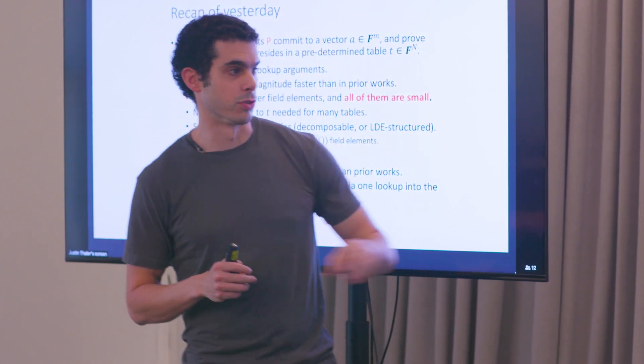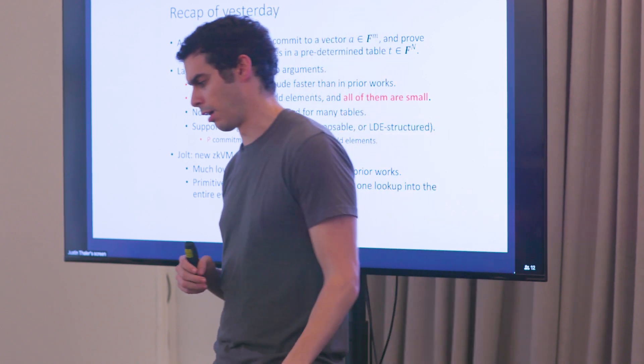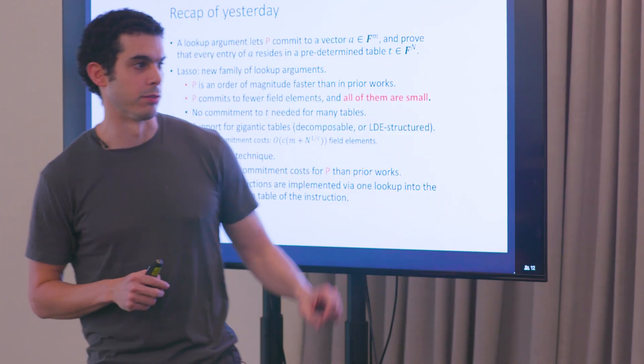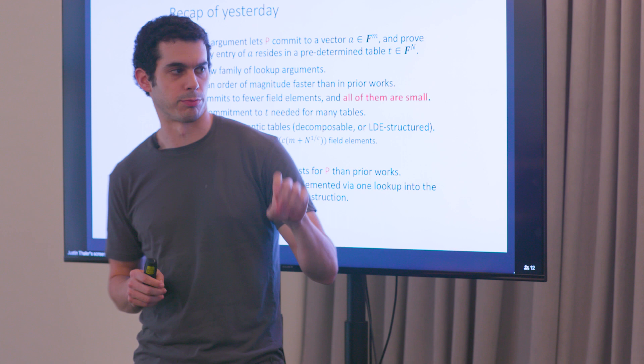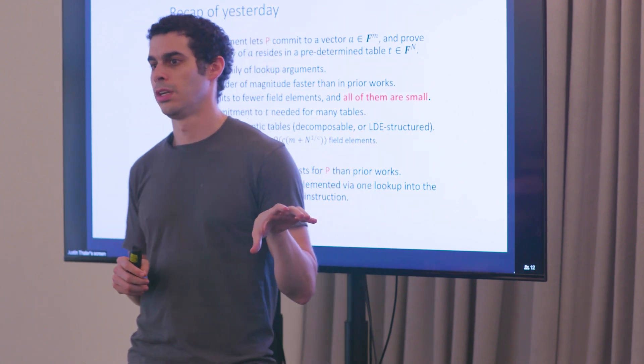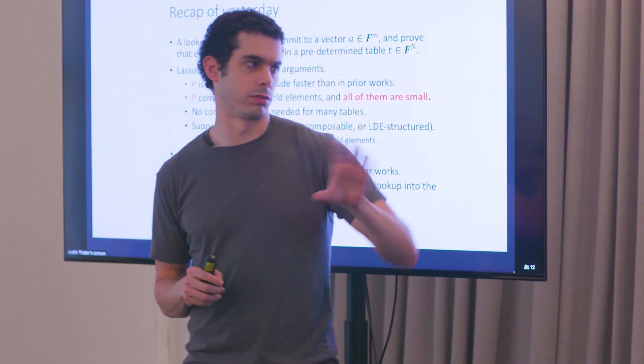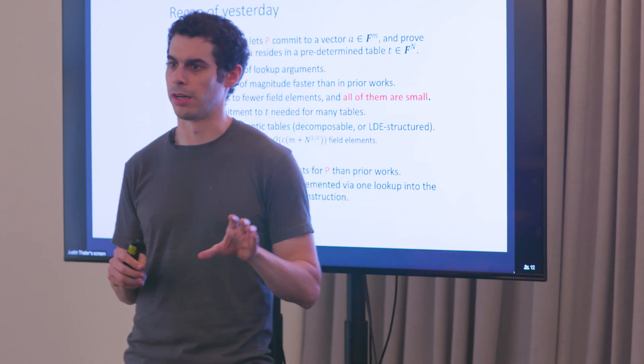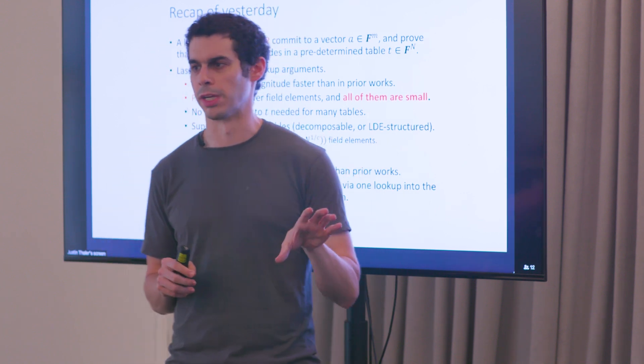And we build Jolt, which is a new ZKVM technique out of Lasso, which uses a property called decomposability of the table. And actually prior lookup arguments also could handle decomposable tables, but probably with more overheads.